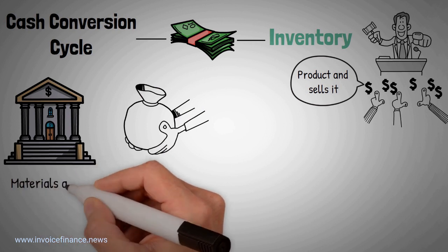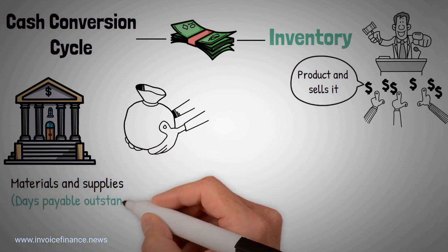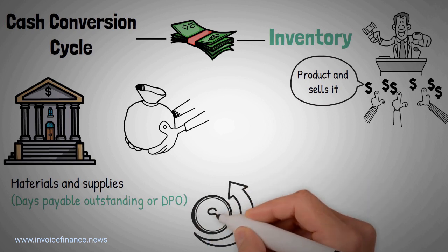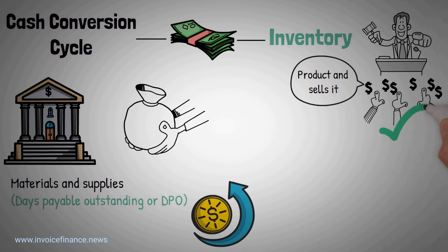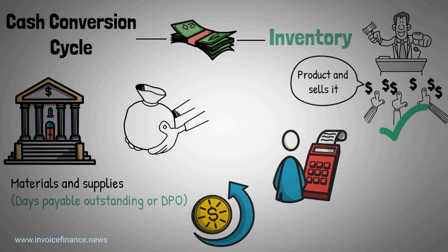Moreover, if the time allowed for paying for materials and supplies — days payable outstanding, or DPO — is increased, then cash flow is further enhanced. It is the ideal situation for a company to quickly make and sell things and be able to delay payment for supplies. It is the ideal situation where cash flow ceases to be a problem.